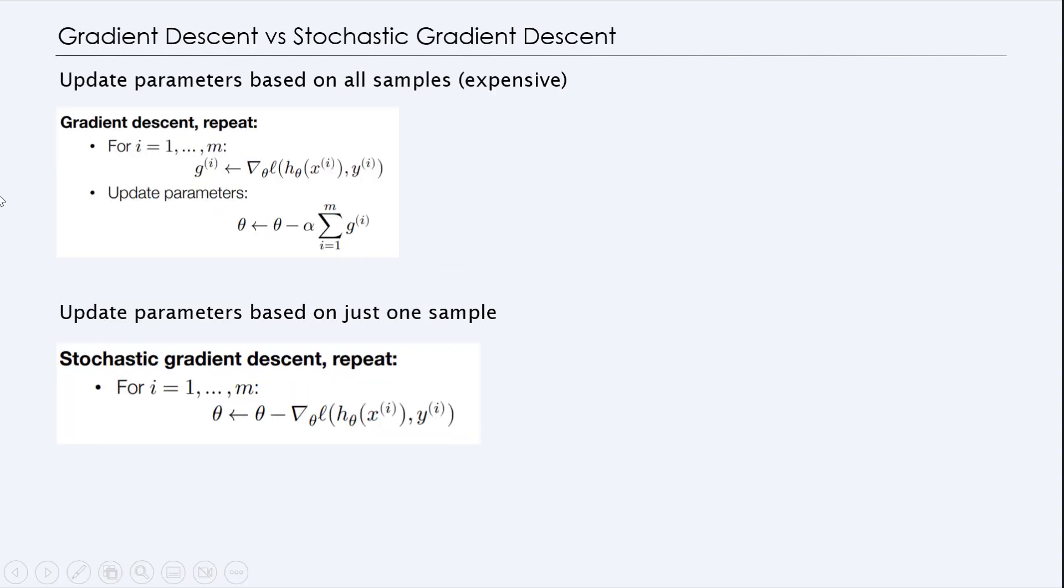So gradient descent versus stochastic gradient descent. Updating parameters are based on all the samples, which is expensive for the gradient descent. This is the typical gradient descent algorithm. But in stochastic gradient descent, we repeat using one sample at a time, x_i, y_i as we go.